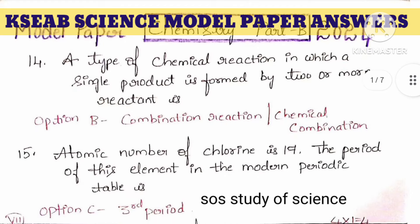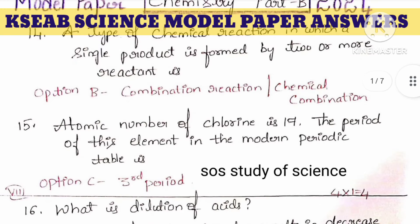14th question: type of chemical reaction in which a single product is formed by two or more reactants. The right answer is combination reaction. In the options, 'chemical combination' also has the same meaning, so both are acceptable.